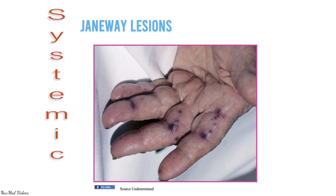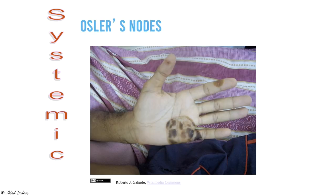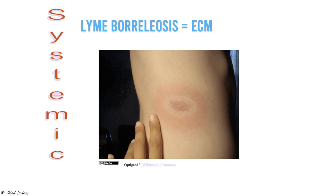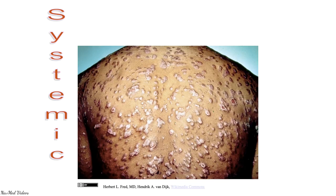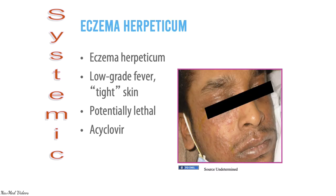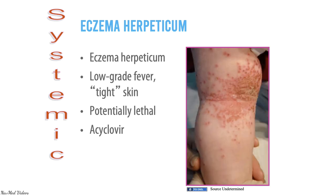Systemic lesions can include Janeway lesions and Osler's nodes (as seen in infective endocarditis). Lyme borreliosis presents with a very classic target sign (erythema migrans). Syphilis, though rare these days, has characteristic skin lesions. Eczema herpeticum presents with low-grade fever and tight skin; it is potentially lethal and treated with acyclovir.